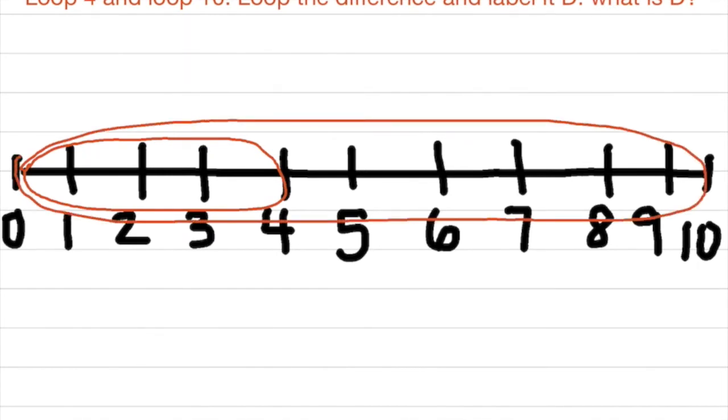Now it says to loop the difference and label it D. So here's our difference right here. We're going to create a loop there and we're going to identify the difference. The difference will be from 4 plus an amount totals the largest number 10.